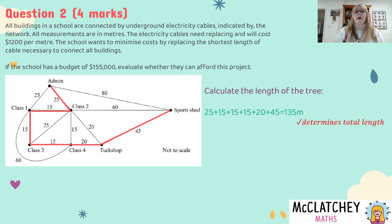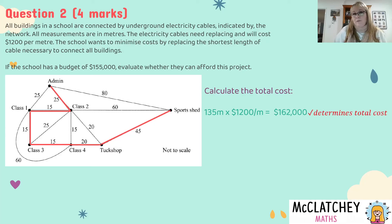Now that I've got the length of the network I know the cost is 1200 per meter from the question so now I simply going to take that total distance and multiply it by 1200 per meter which gives me a total cost of 162,000 and that's the total cost for the network that's my third mark.